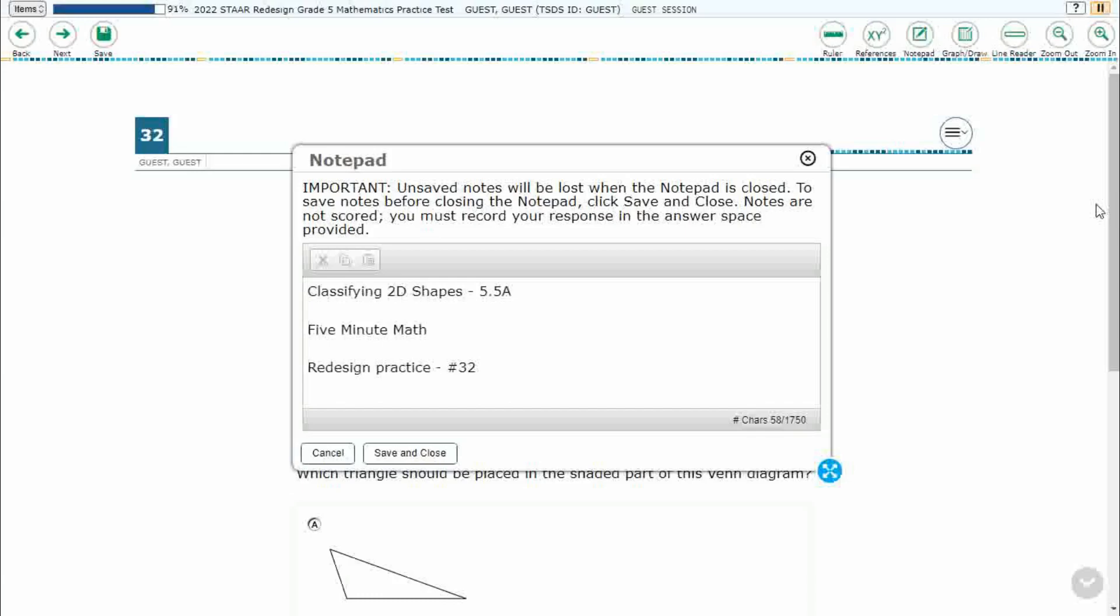Hello and welcome to 5-Minute Math. Today we are looking at the fifth grade concept of classifying two-dimensional shapes. This is standard 5.5a in the great state of Texas, and we are using item number 32 of the Redesign Practice Online Start Test.